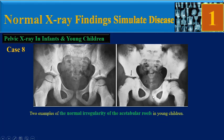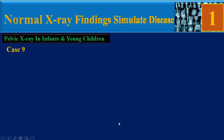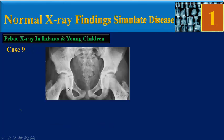Case 8: two examples of the normal irregularity of the acetabular roofs in young children. This appearance is normal between ages 7 and 12 years.